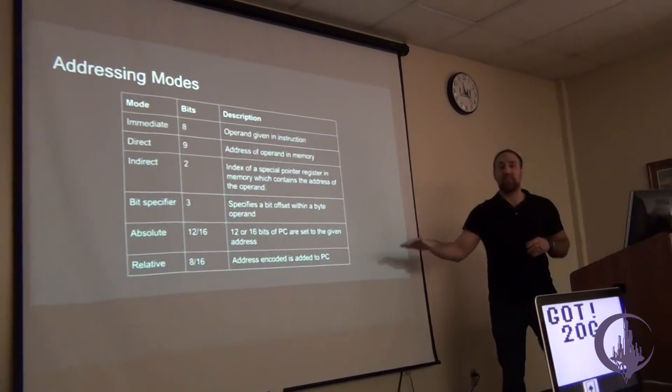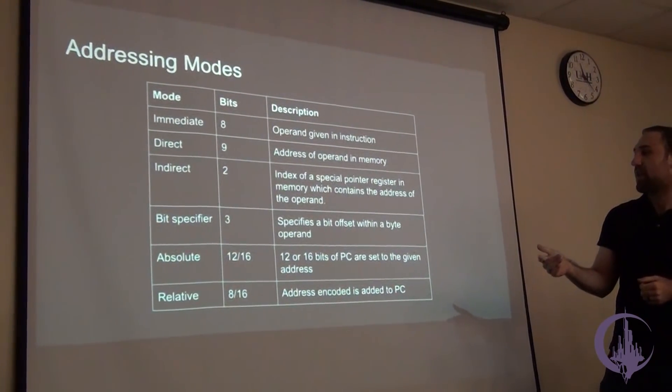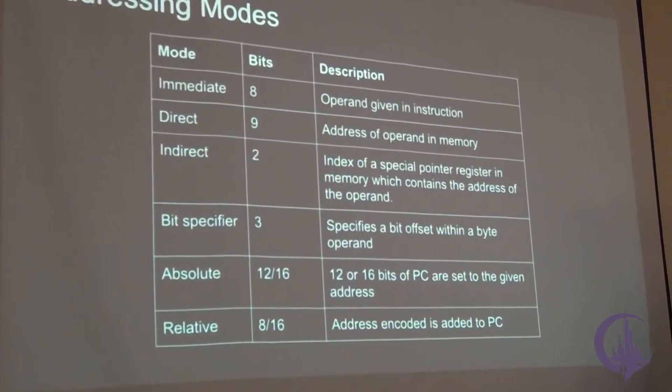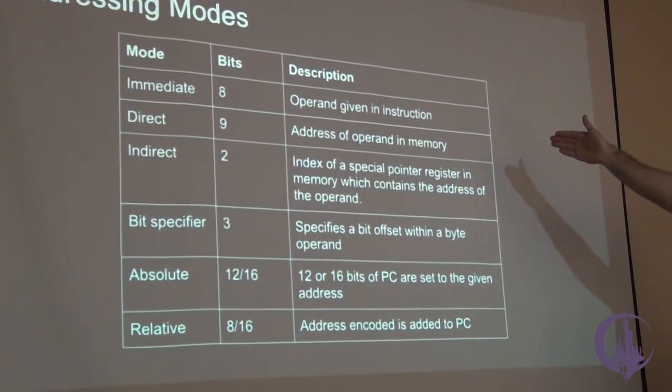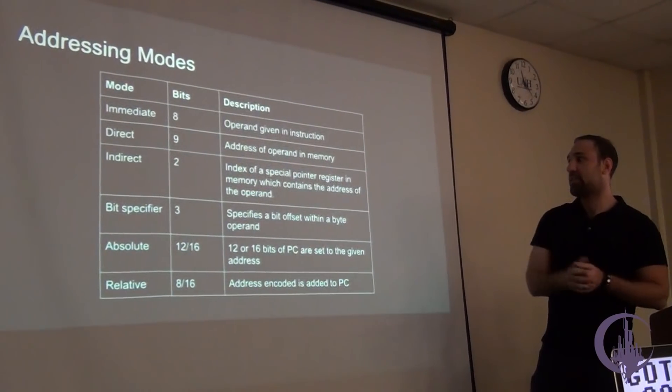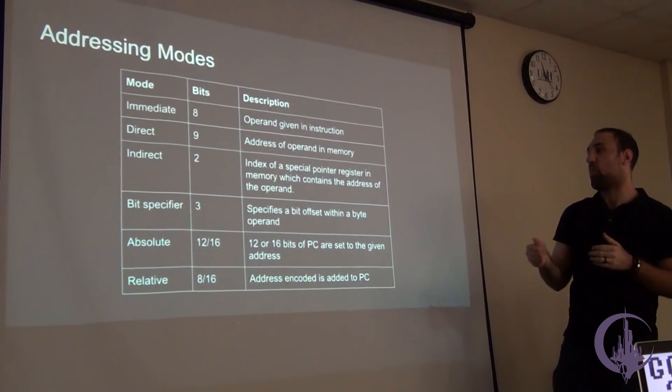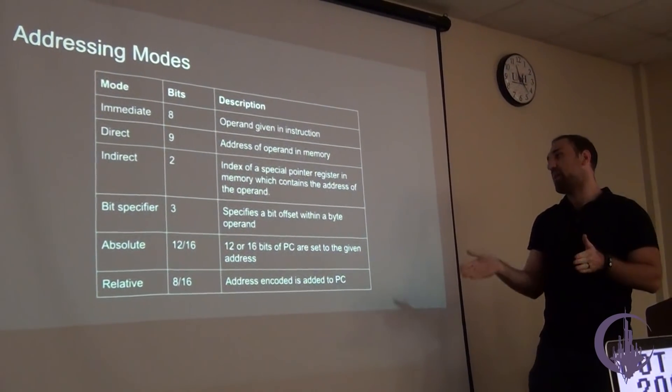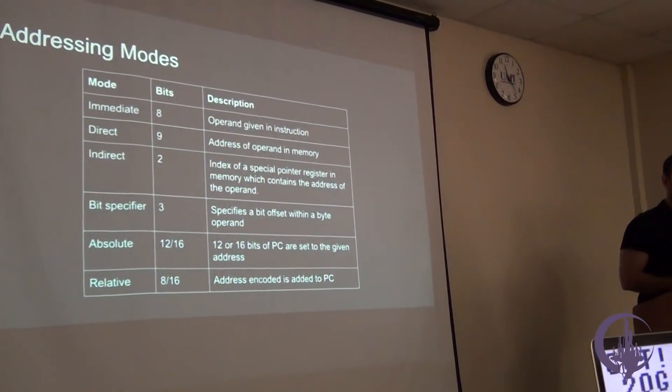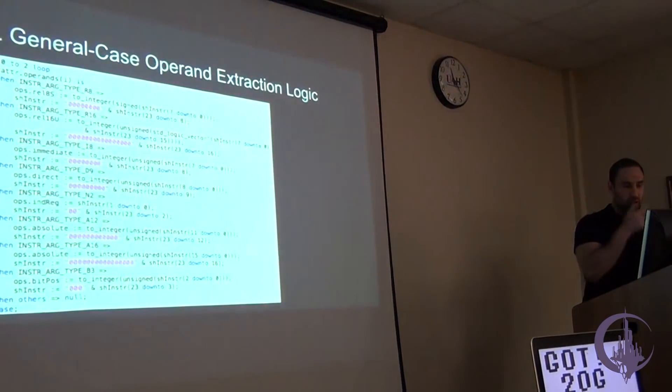These are the different addressing modes, which are relevant to how the operands are extracted. There's immediate, direct, indirect, bit specifier, absolute, and relative. This is the number of bits they are. Immediate is pretty obvious. It's in the instruction itself. Direct is basically a memory address inside the instruction. Indirect is a huge pain. I'll get into it later. That's basically like a pointer, loading a pointer that's in memory pointing to another address. Bit specifiers for doing things like clearing one bit, and then absolute and relative are for branching conditional logic.